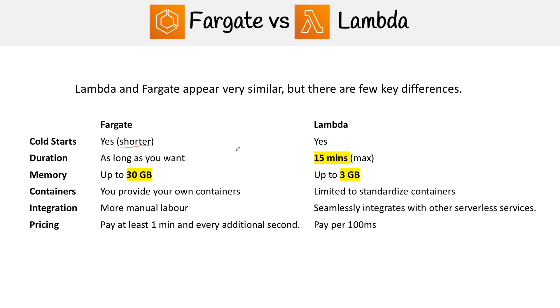A big differentiating factor is duration. With Lambda, the maximum time you can run it is 15 minutes, whereas the duration with a Fargate task can run as long as you want, because you can just make it a service and it runs indefinitely.